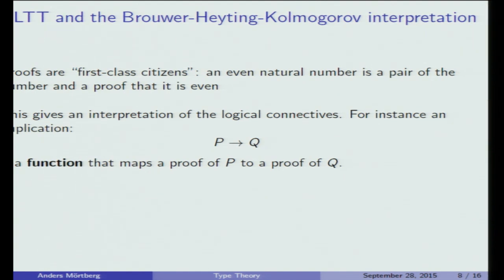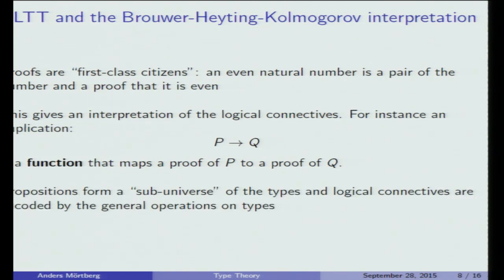This gives a very nice interpretation of the logical connectives, usually called the Brouwer-Heyting-Kolmogorov interpretation. For instance, an implication P implies Q is interpreted as a function that maps a proof of P into a proof of Q. This way, propositions form a sub-universe of all types, and the logical connectives are encoded by general operations on types — a very different flavor from set theory.